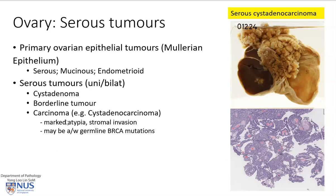These tumours feature marked architectural atypia — we can see very complex papillary structures — as well as marked nuclear atypia and invasion into the stroma, which is the cyst wall. These tumours may also be associated with germline mutations in BRCA genes, and hence associated tumours such as breast carcinoma and endometrial carcinoma. Serous carcinomas associated with germline BRCA mutations may also present with carcinoma of the breast, fallopian tube, and potentially other sites.